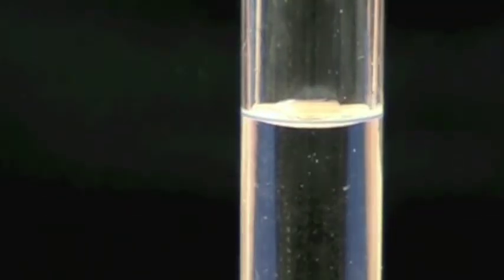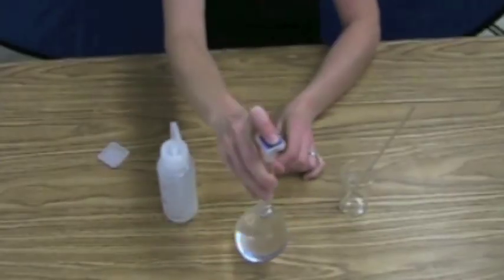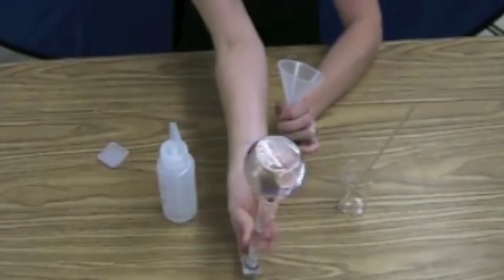Once it's at that line, then you cap it and you invert it about 10 to 20 times just to really make sure that you've really mixed it thoroughly.